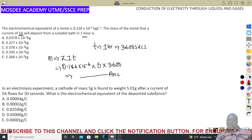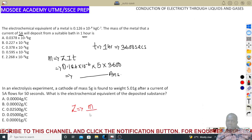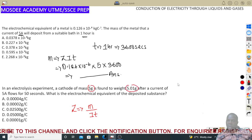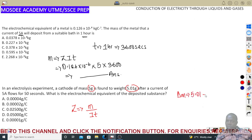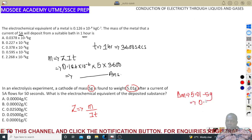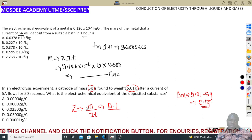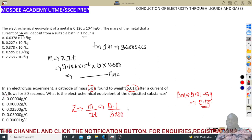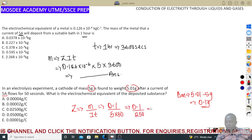In an electrolysis experiment, a cathode of mass 5 g is weighed to be 5.01 g after a current of 5 amps flows for 50 seconds. Find the electrochemical equivalent z. Rearranging: z = m / (I·t). The change in mass is 5.01 − 5.00 = 0.01 g. So z = 0.01 divided by (5 × 50) = 0.01 / 250.